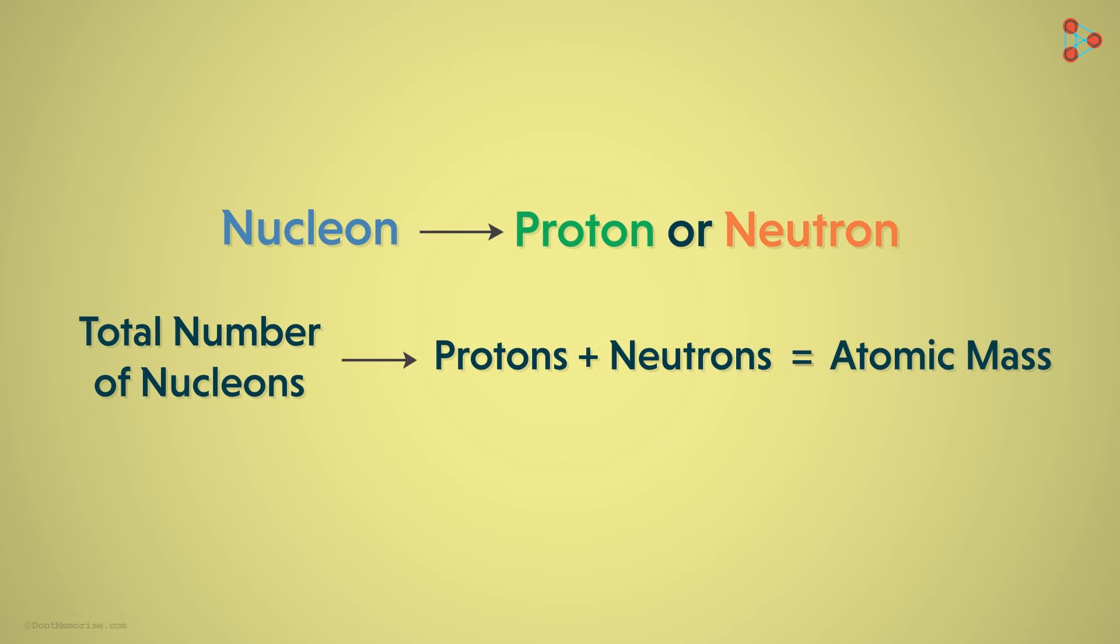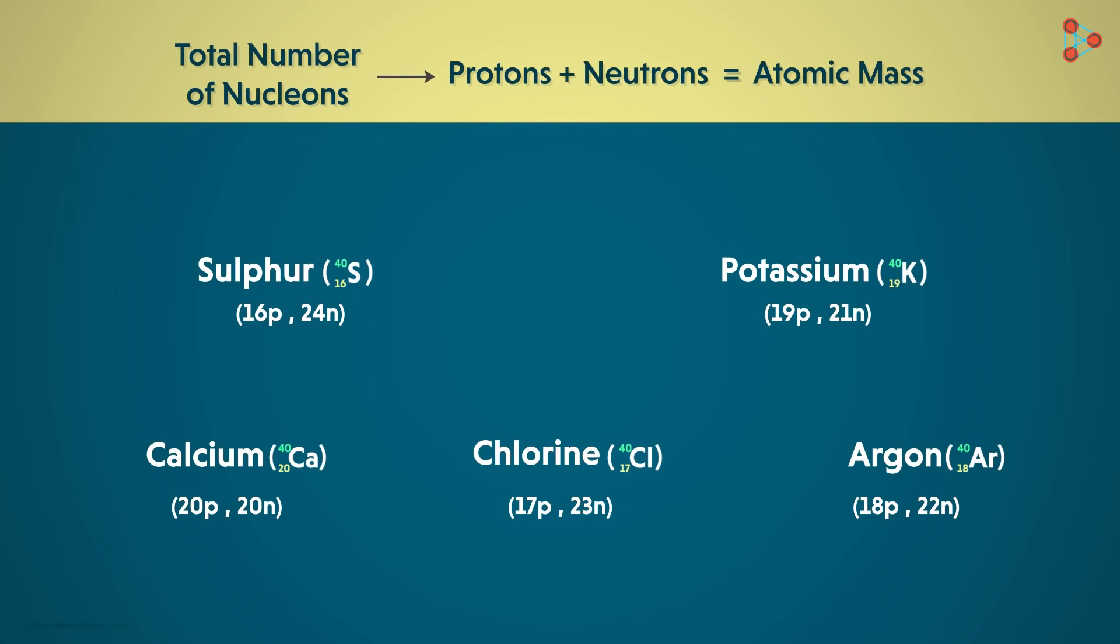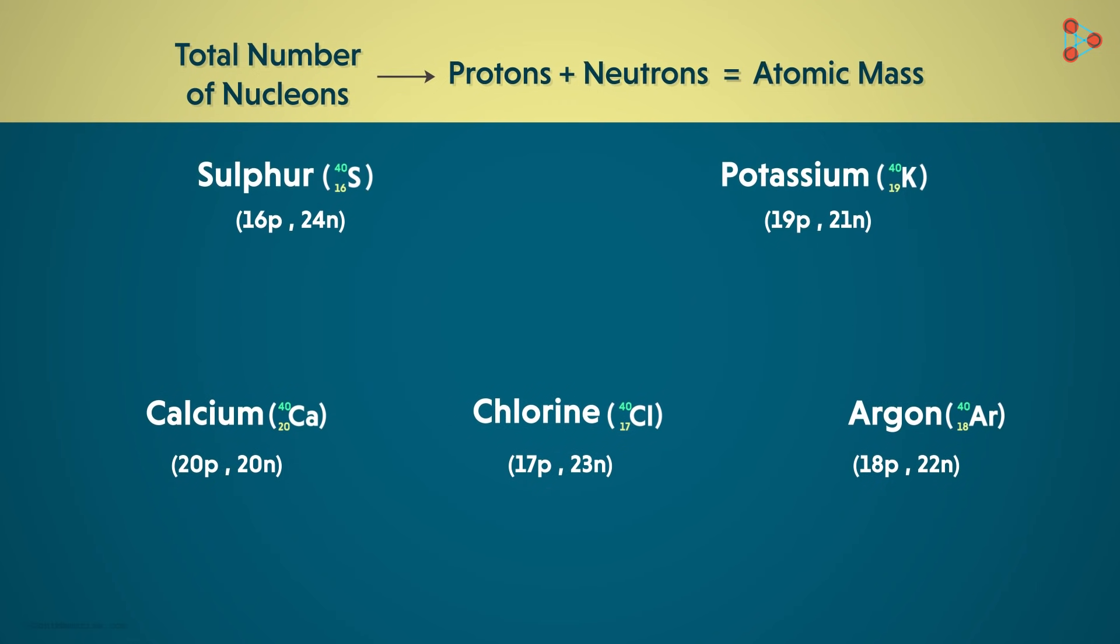Understand this well: the total number of nucleons, which is nothing but the sum of protons and neutrons, is the same as the atomic mass of the atom. So coming back to our example, there are 5 different atoms here. Though the number of protons and the number of neutrons is different in each case, the total number of nucleons in each is the same, which means the atomic masses are the same.